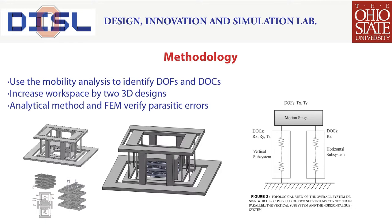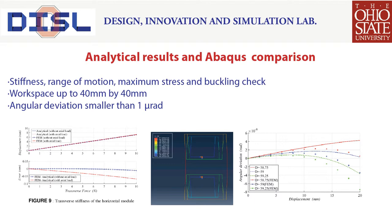For the vertical subsystem, the goal is to constrain three out-of-plane degrees of freedom: rotations in X and Y, and translation in Z. Additionally, the degree of rotation in Z relies on the horizontal subsystem to enhance the rotational stiffness. Both subsystems are free to move in the X and Y directions.